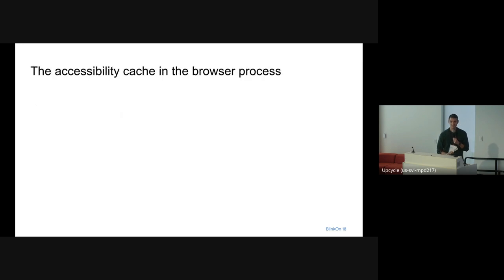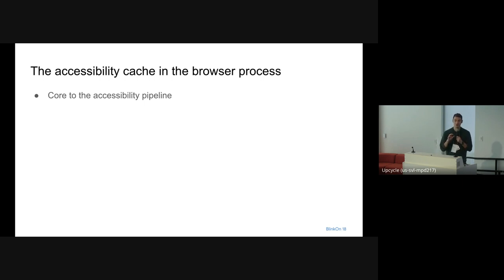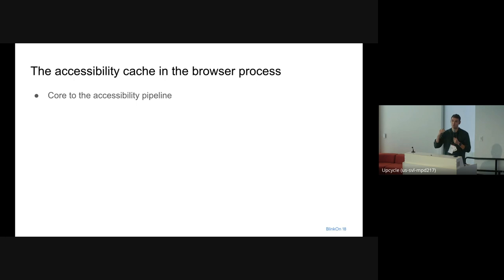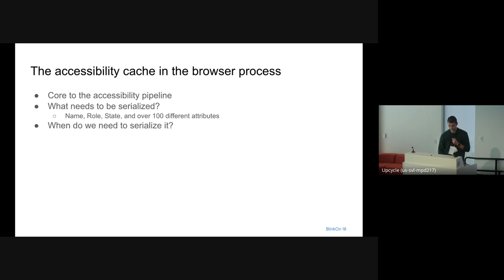At the core of that accessibility pipeline is this accessibility cache. This cache needs to store everything that the renderer sends to it, and the renderer sends a lot of stuff. It sends basically all the possibly relevant nodes that create that web content — up to over 100 attributes per node. So that's a lot of data. And it also needs to update a lot and quite often, because the content needs to be ready before the screen reader needs to access it.